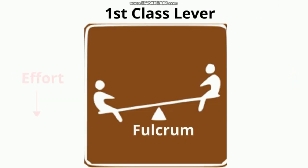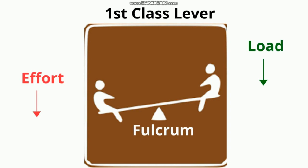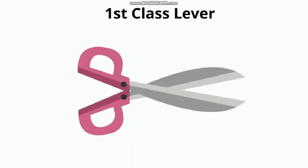A quick example for the first class lever: the fulcrum is at the center, effort is at one side, and load is at one side. The best example is a seesaw — you might already know how a seesaw works, with the fulcrum at the center.